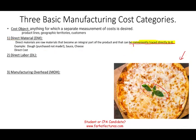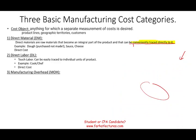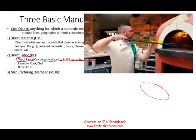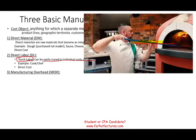Now let's talk about direct labor. Direct labor is also known as touch labor — touch means the labor that's going to touch the product, and it should be easily traced to individual units of product. For example, the chef or cook making the pizza is considered direct labor. Why? Because this individual is touching the product — adding the sauce, adding the cheese, spreading the dough, putting it into the oven, taking it out, putting it into a box, getting the product ready. They are directly involved, and we can easily trace their effort to the product.